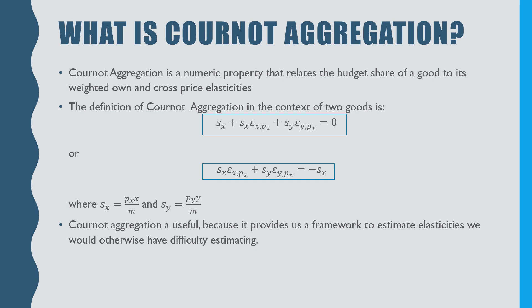The definition of Cournot aggregation in the context of two goods is defined as the budget share of good X plus the budget share of good X times its own price elasticity plus the budget share of good Y times its cross-price elasticity with good X is equal to zero.